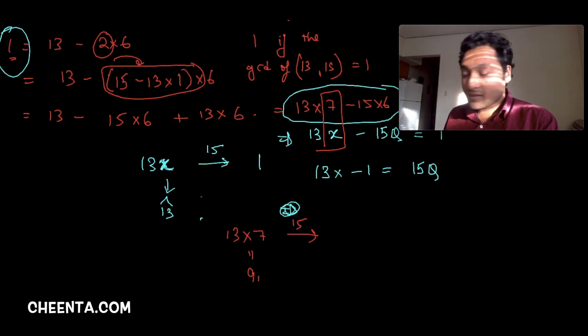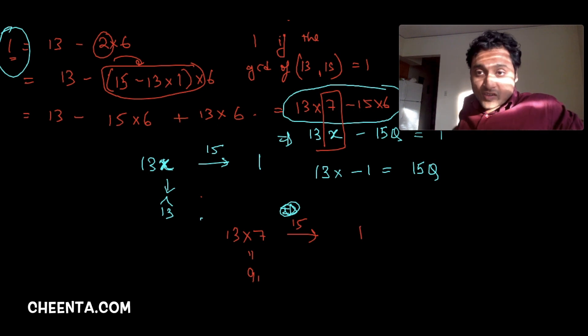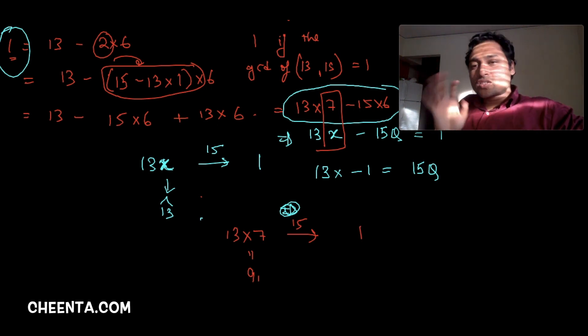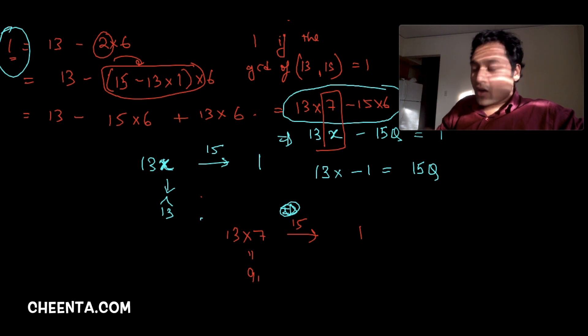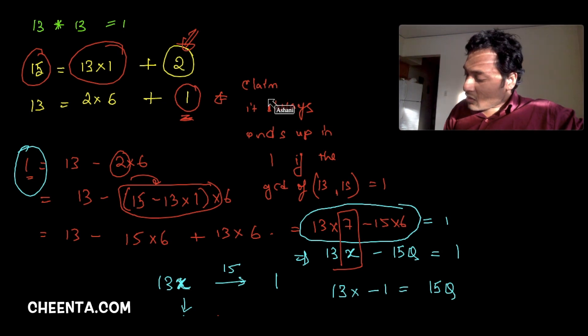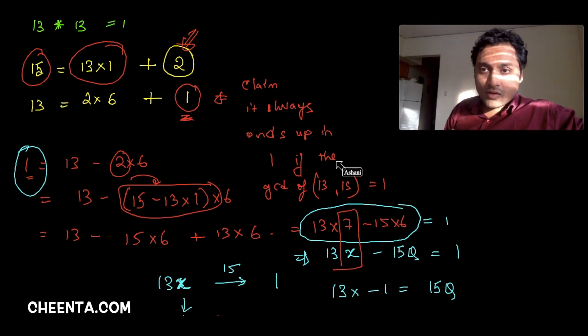Now the question really was, okay we understand how this process works, but how do we know that it will always end up in one? How do we know that such an inverse always exists? This brings us to something called Bézout's theorem, which is one of the most intricate theorems of elementary number theory.